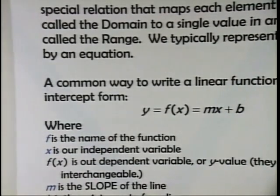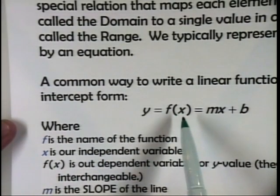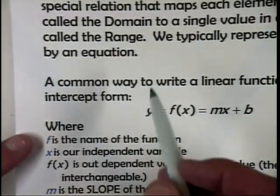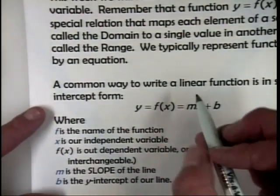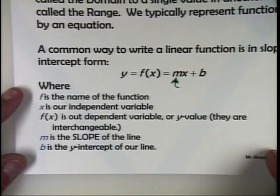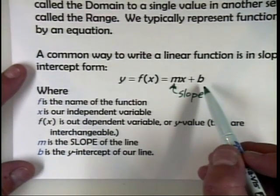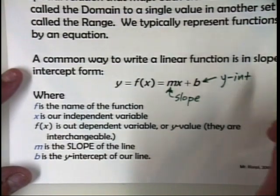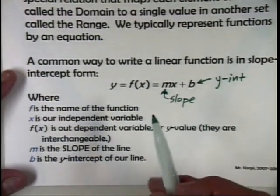F is the name of the function — we'll be looking at functions like g of x or h of x. X is our independent variable, and one of the beauties of function notation is we can see the independent variable there. F of x, the whole thing, is our dependent variable — it's the y value on the graph. M is the slope of our line. There's been debate about why the letter m; one theory is it's from the French verb 'monter,' which means to climb, but that's been discredited. B is our constant — the y-intercept, the point at which the graph crosses the y-axis.